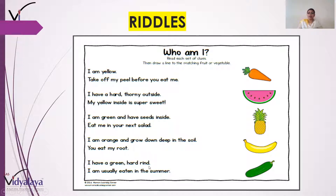I have a green hard ring outside — yaani main bahar se bhoat hi sakht hoon, ek joh khal hai bahar se green color ki sakht hai. I am usually eaten in the summer — aur mujhe zyada tar summer mein yaani garmiyon mein khaya jaata hai. Toh ye kaun hai? Of course, this is a watermelon — yaani tarbooz! Maza aaya ki nahi in riddles mein? Toh aap ye riddles apne friends aur family ko bhi pooch sakte hain.